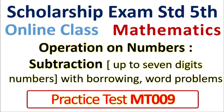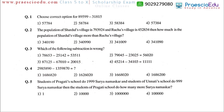Question number 1: choose the correct option for 89,599 minus 31,815. We will do this subtraction in the same horizontal arrangement. So 9 minus 5 is 4.